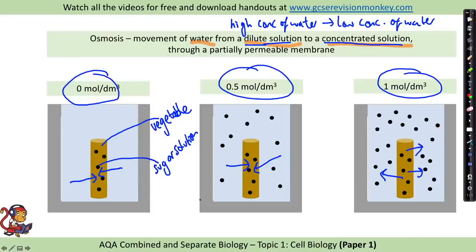In terms of mass change, if you measured the mass of the vegetable before and after: pieces that gained water show a mass increase, and pieces that lost water show a mass decrease.